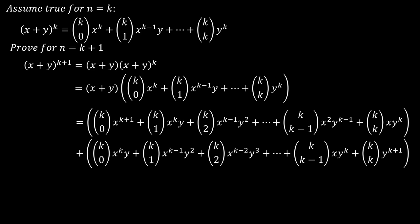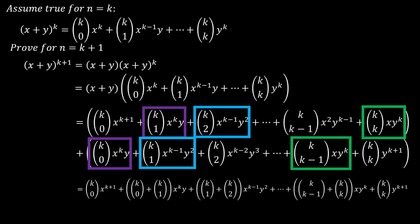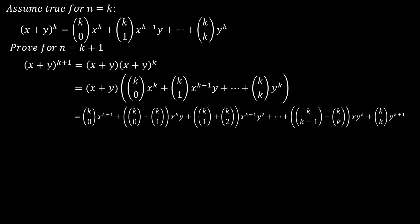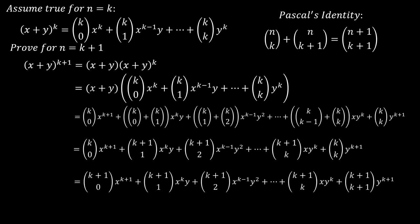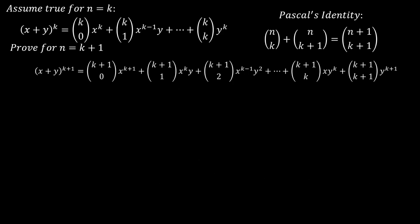And now we are going to group like terms together and factor the variables out. Now notice that the coefficients are a sum of two combinations, excluding x to the k plus 1 and y to the k plus 1. And here we can actually use Pascal's identity to simplify the sum into a single combination. And we can also write the combination k choose 0 as k plus 1 choose 0, and the combination k choose k as k plus 1 choose k plus 1. Thus the theorem is true for n equals k plus 1, if it is true for n equals k.